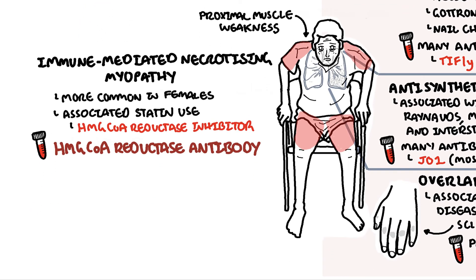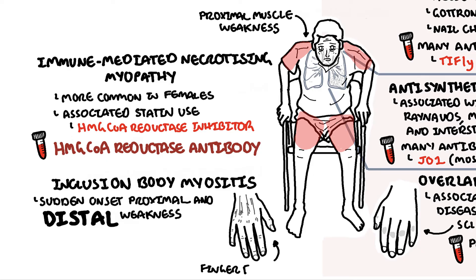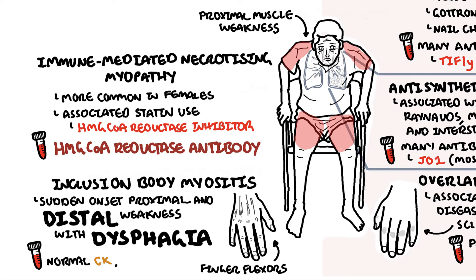The last type is inclusion body myositis. There is no rash, but interestingly people often have sudden onset disease with not only proximal muscle weakness but also distal muscle weakness, particularly in the finger flexors, which is not as common in other types. Inclusion body myositis is very frequently associated with dysphagia — difficulty swallowing. It is more common in men above 50, and there is usually normal or only slightly elevated creatine kinase.